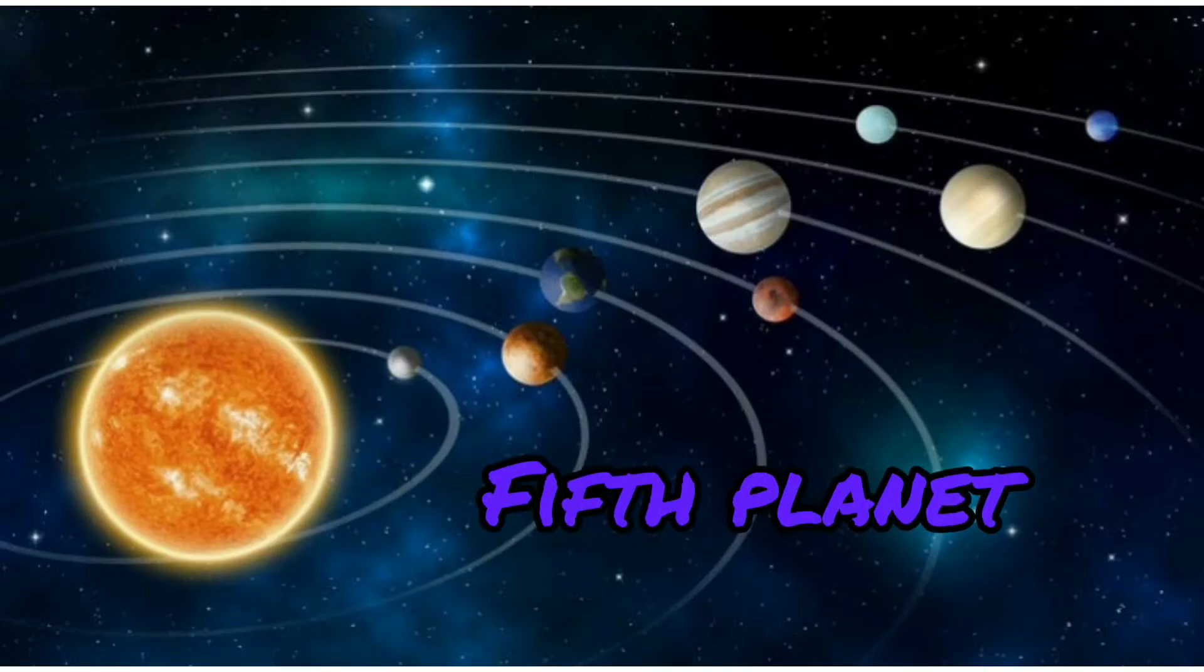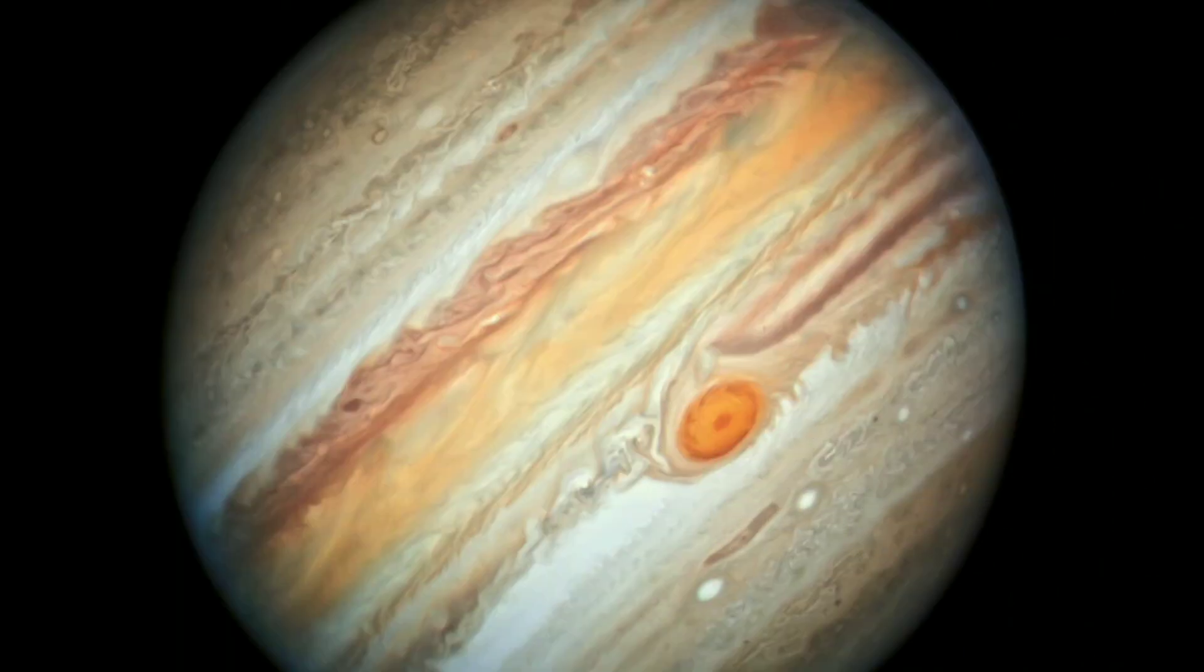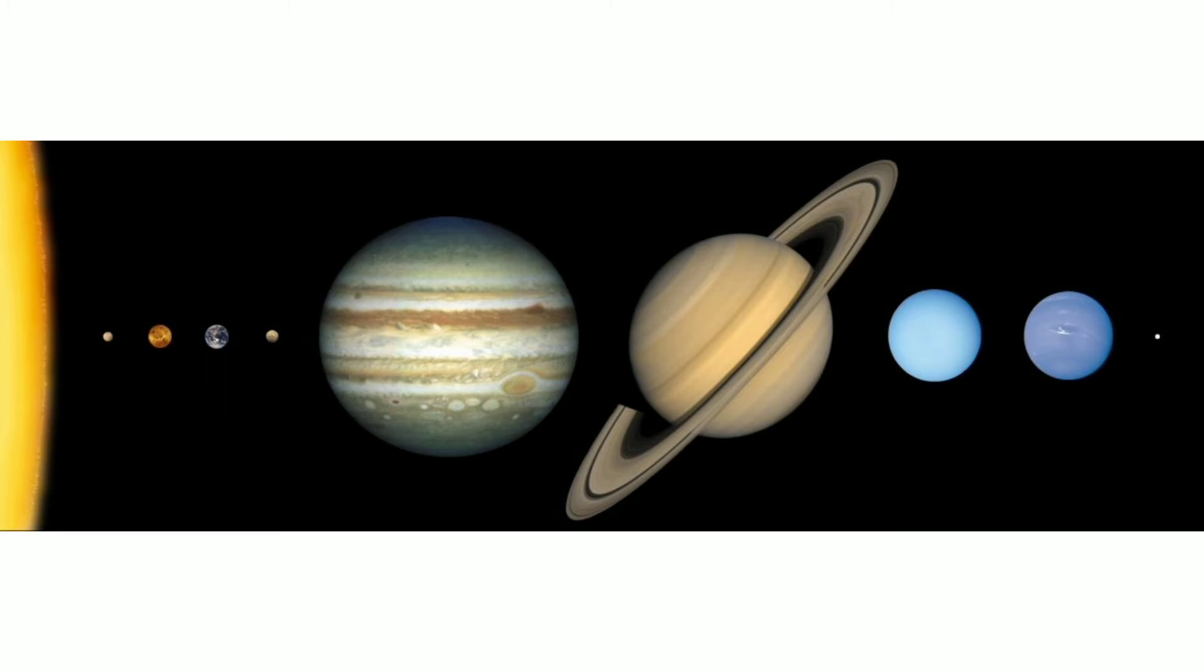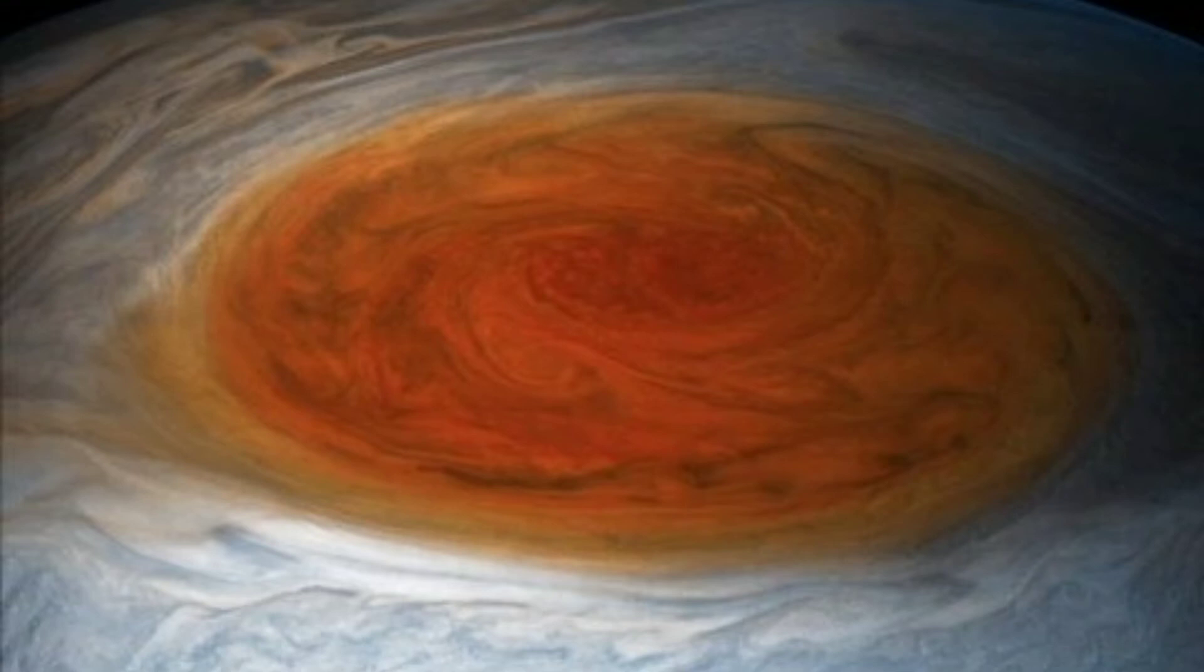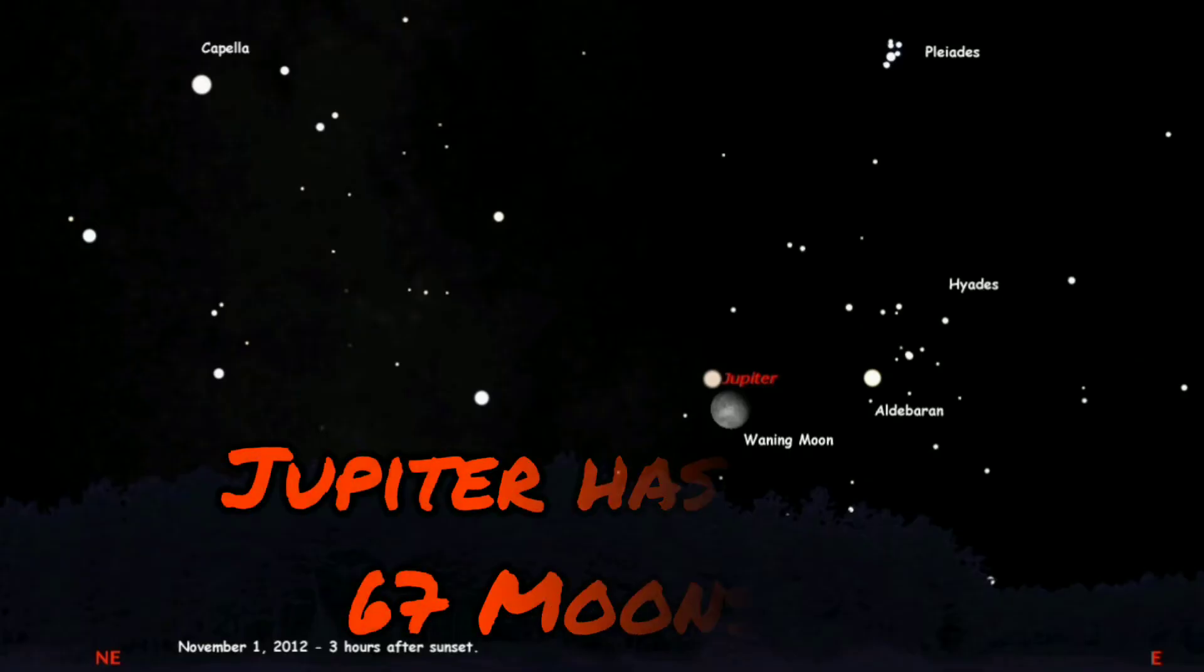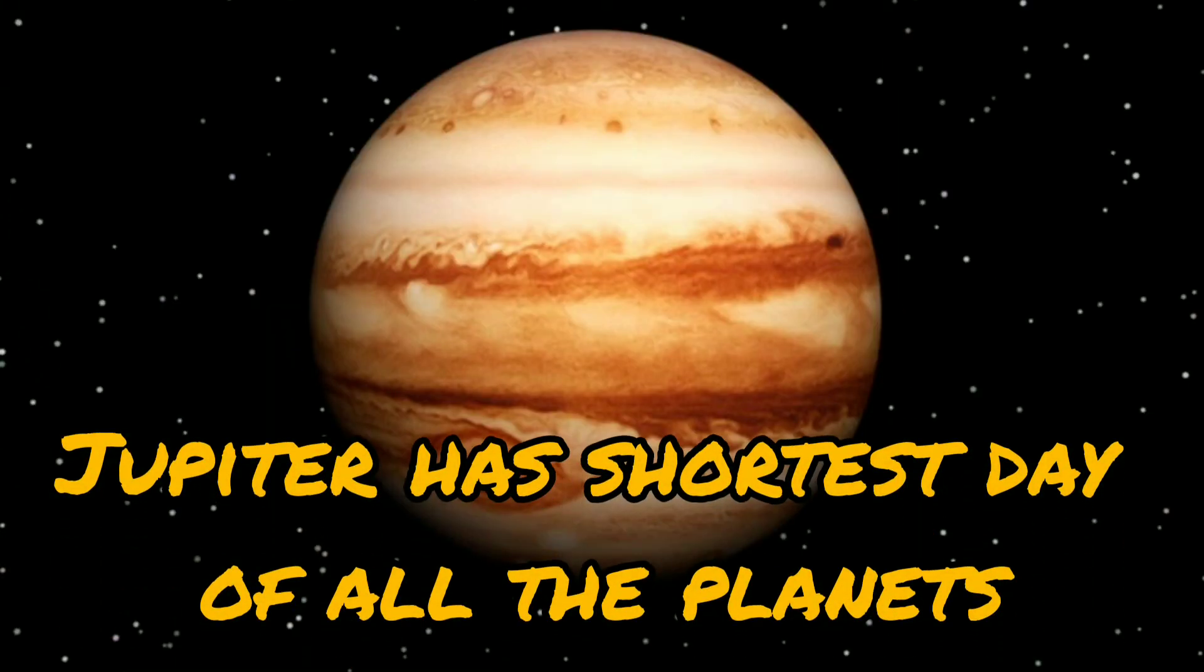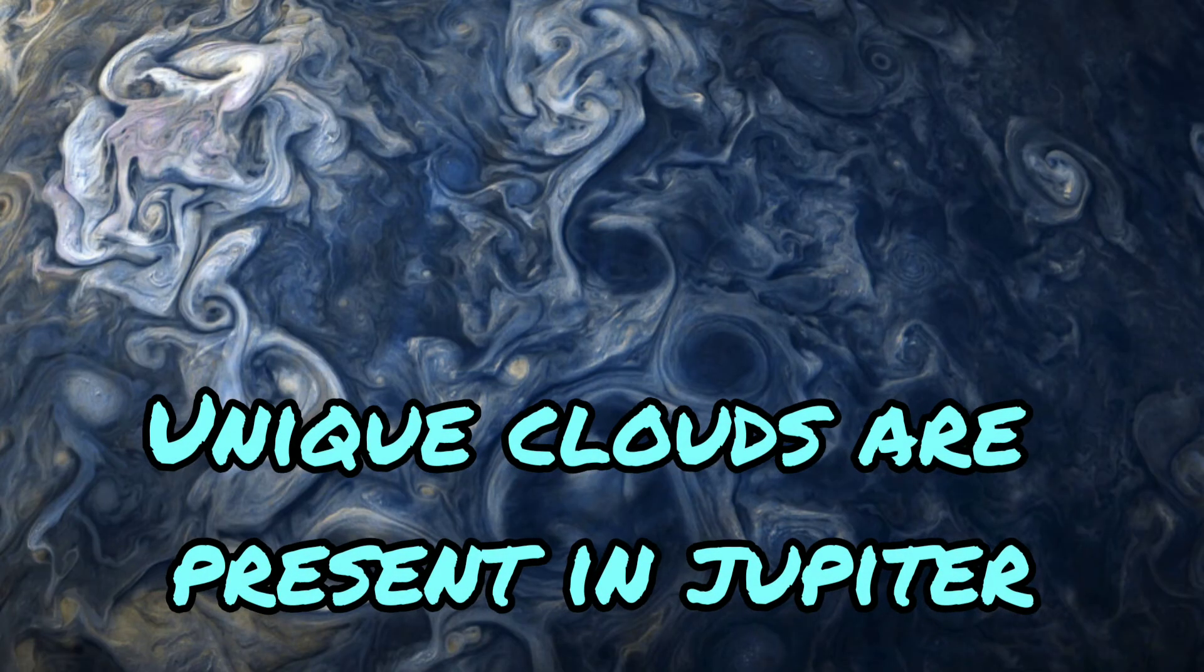Now let's know about the fifth planet, Jupiter. Jupiter is the largest planet of the solar system. It is the fastest spinning planet of the solar system. Jupiter has a large red spot which contains a huge amount of energy. Jupiter has rings around it. Jupiter has 67 moons. Jupiter has the shortest day of all the planets. Jupiter has unique clouds.